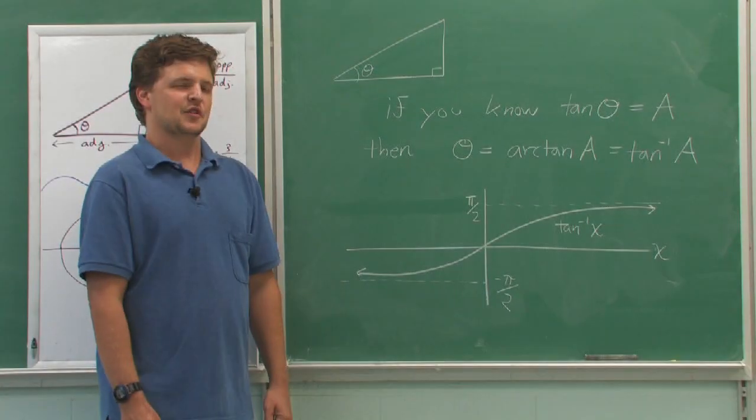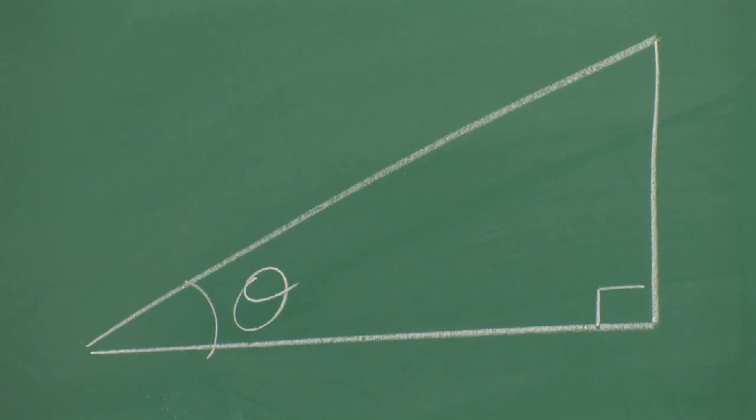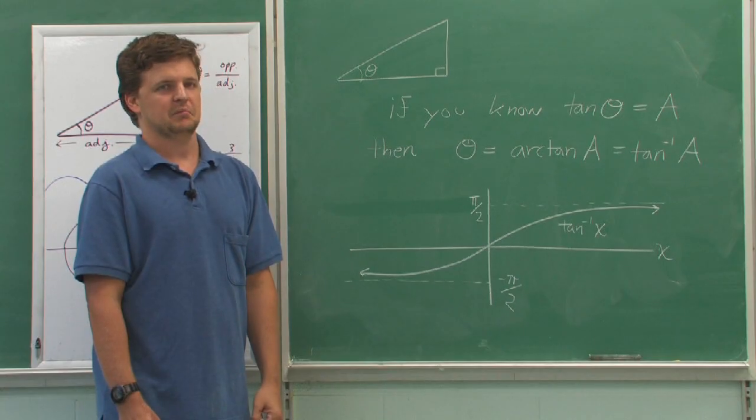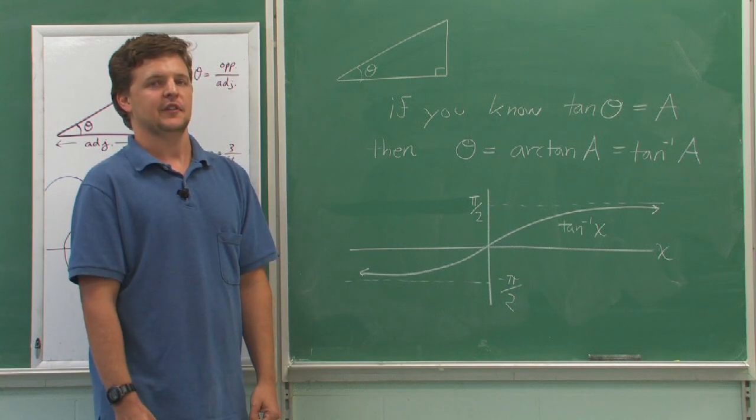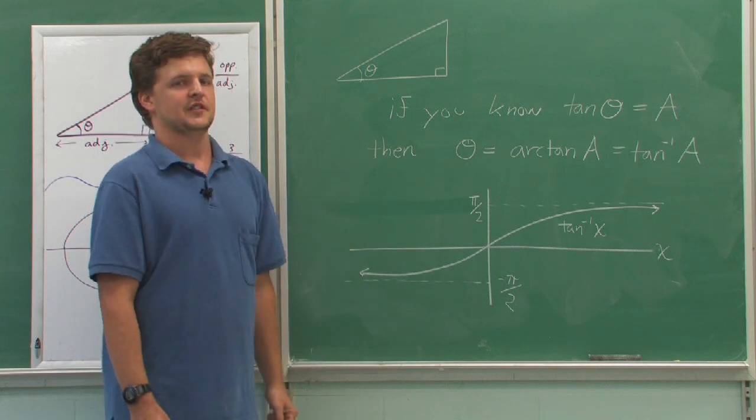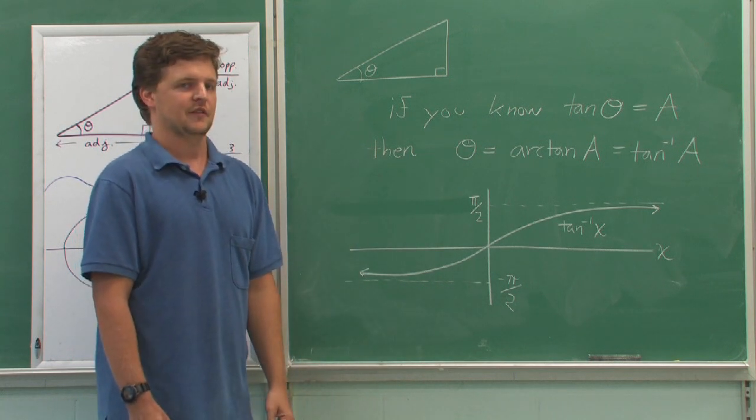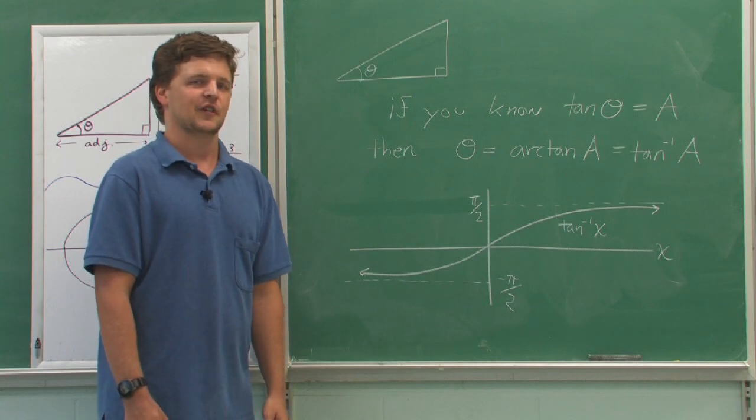Now, in a triangle where theta is the angle, if you happen to know the tangent theta, we'll call it a, then you can work backwards to find out what the angle is. Theta, the angle, is equal to the arctangent of a, or sometimes it's written with the tangent inverse notation.